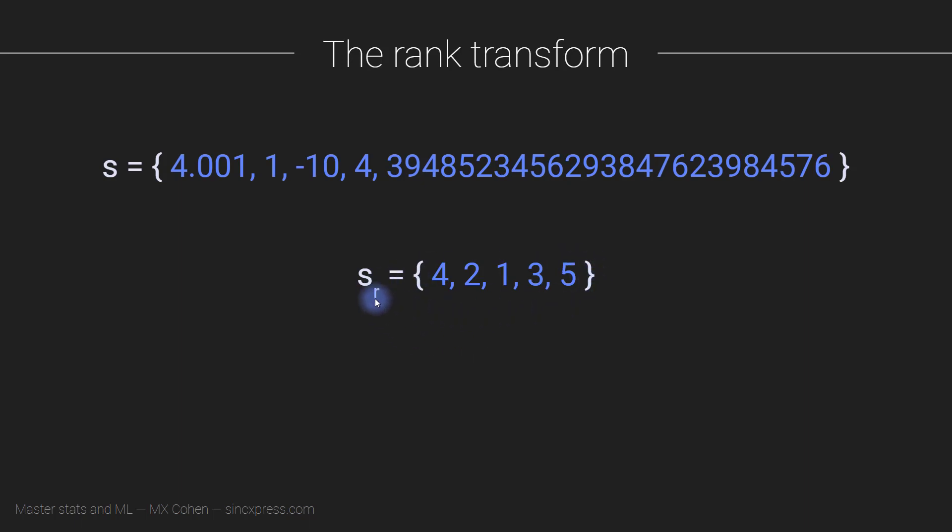Once you get here to the rank, you have no idea what the original numbers were. It's not possible to reconstruct the original numbers purely based on knowing their ranks. For example, let's say I tell you that the fourth number was 4.001—you wouldn't know whether the fifth number is a huge number or if the fifth number could also be 4.002.